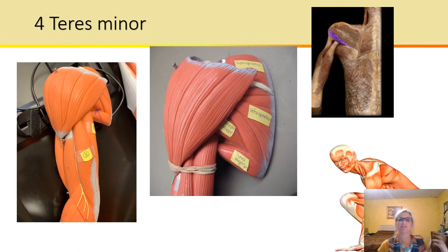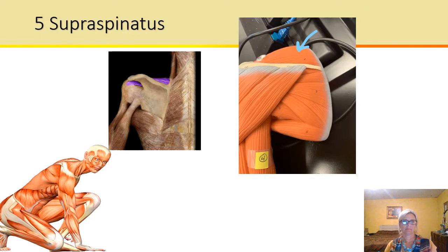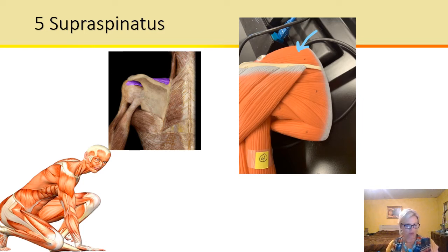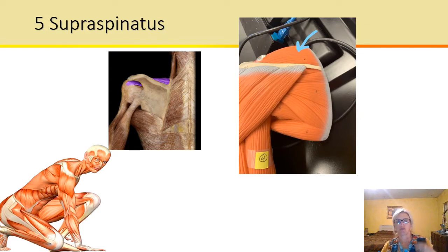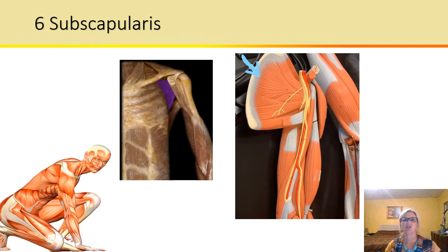Now we have the teres minor, and this is the lesser rounded muscle, and this laterally rotates the arm. All right, we've got the supraspinatus. Super means above, spinatus refers to the spine, so this is the above-the-spine muscle, and this abducts or takes away the arm. This is what actually initiates abduction.